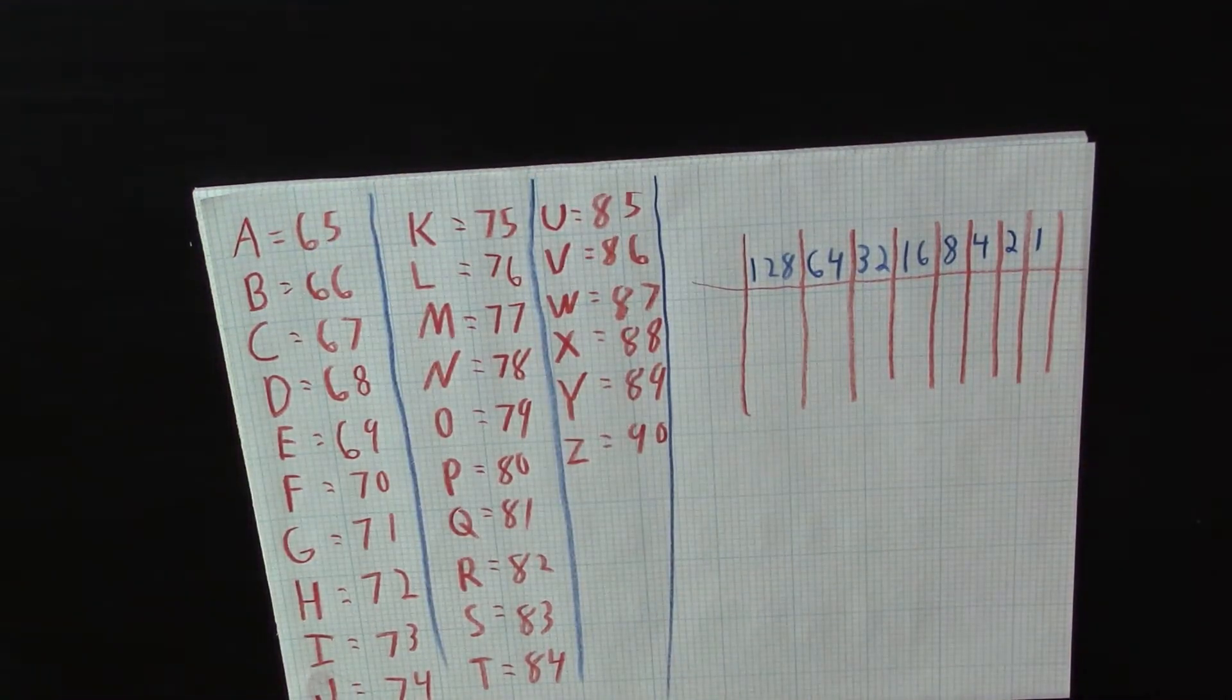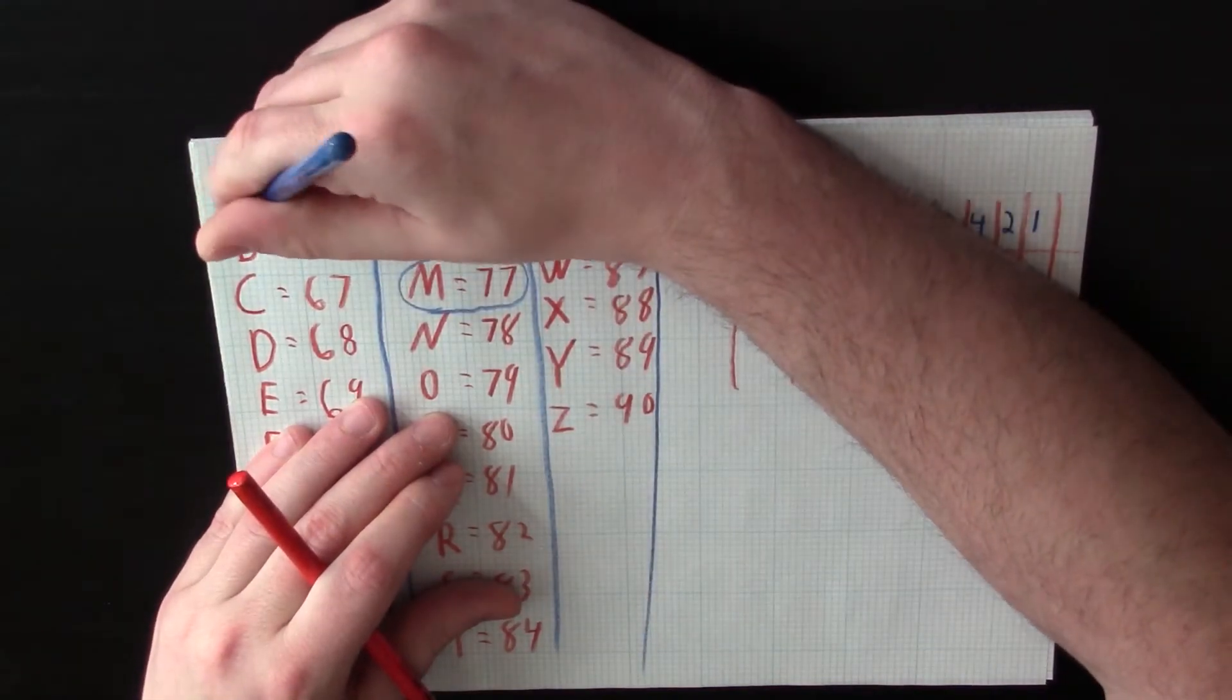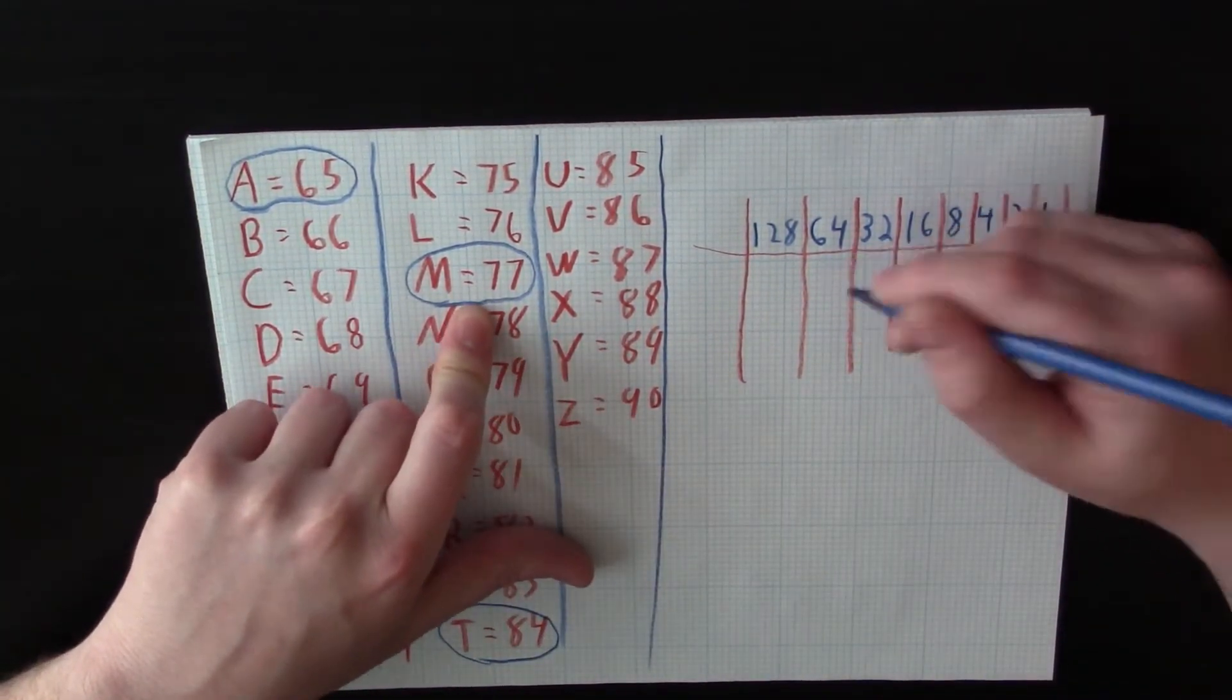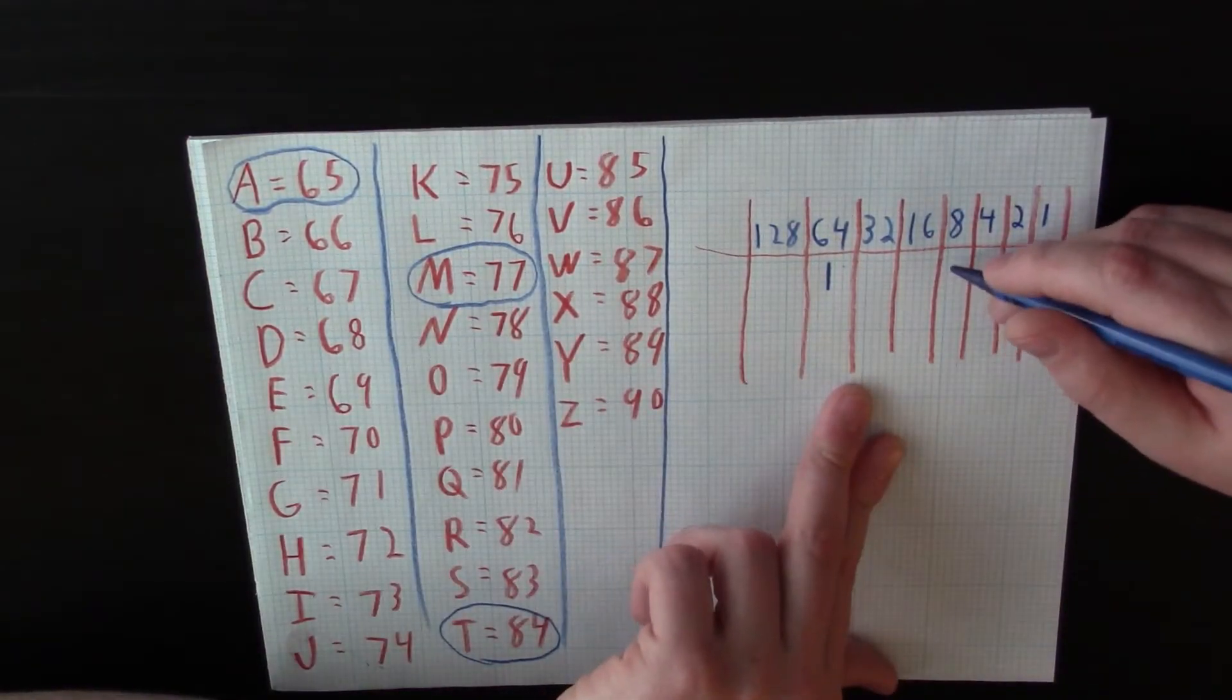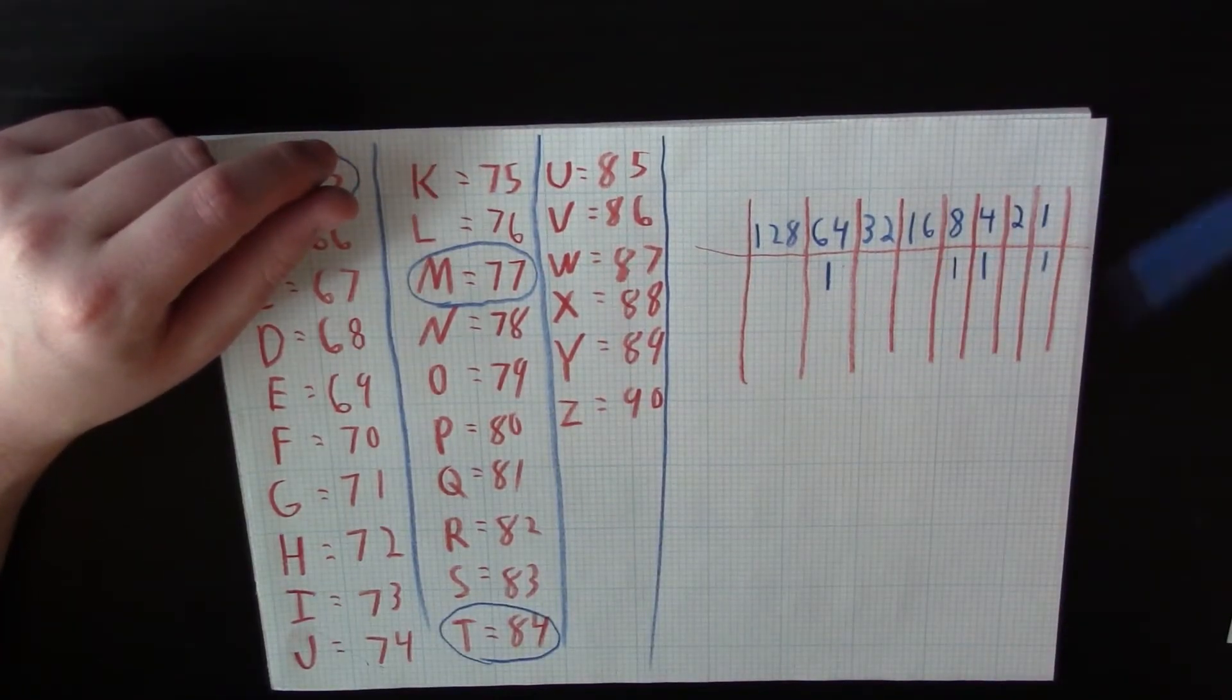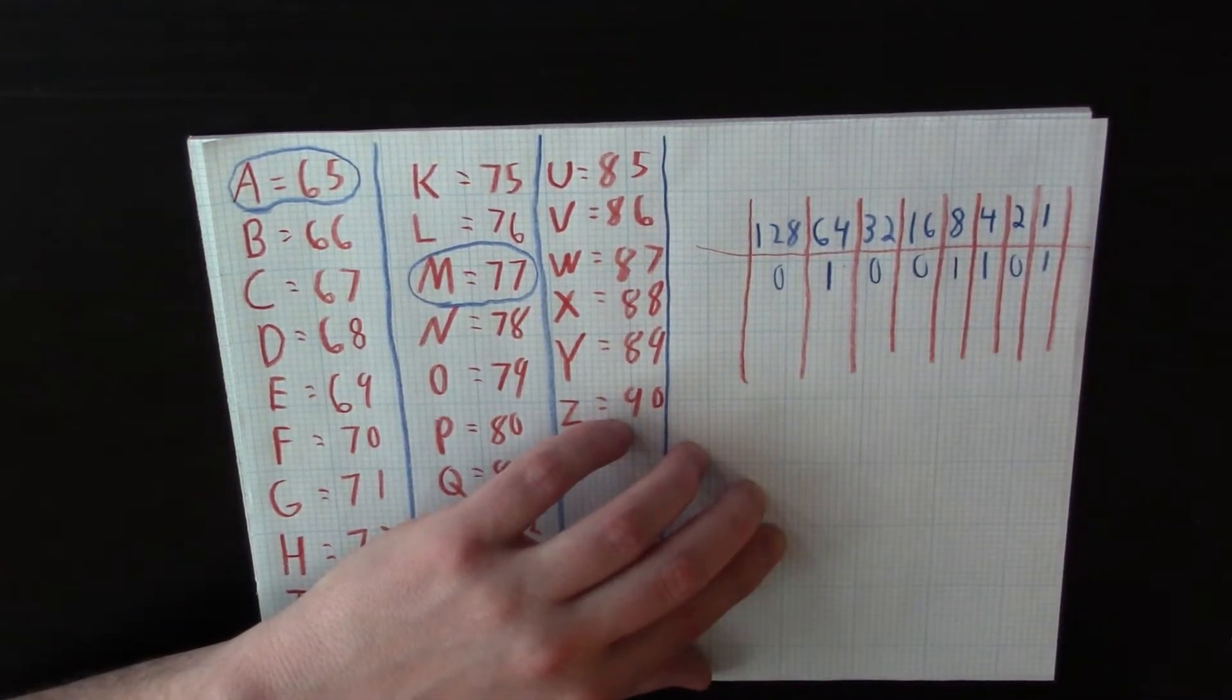So I want to do my name. My name is Matt. So in binary, I'm going to need M, A, T, and another T. So M is 77. We have 67, we have A, we have 64. So we need eight, four, one. 64 plus eight plus four plus one equals 77. So fill in the gaps with zeros. That's our first binary strand.